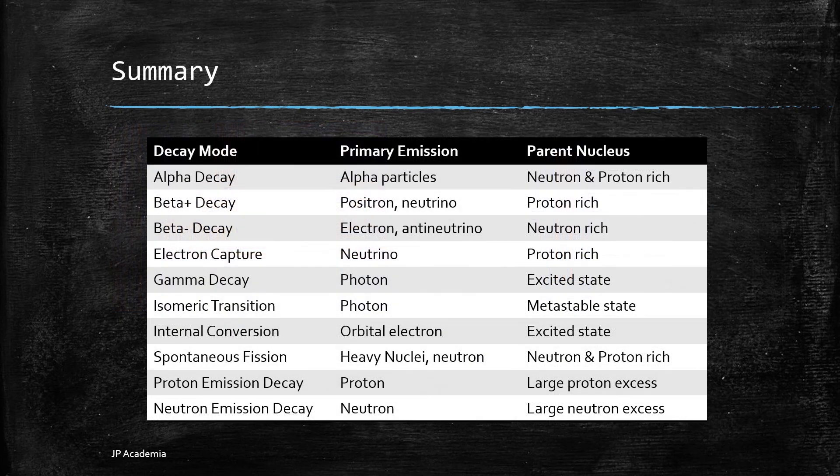This table shows the summary of our discussion with the decay mode, the primary emission, and the parent nucleus. I also added here proton emission decay and neutron emission decay which is for the extreme cases of very large proton excess or if we have an imbalance in the number of neutrons which is quite extreme.